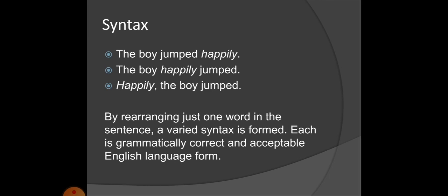We have subject, verb, object, adjective, adverb — different lexical and functional items which are called words. We make phrases and sentences. By varying just one word's arrangement in the sentence, a varied syntax is formed. Each is grammatically correct and acceptable in English language.